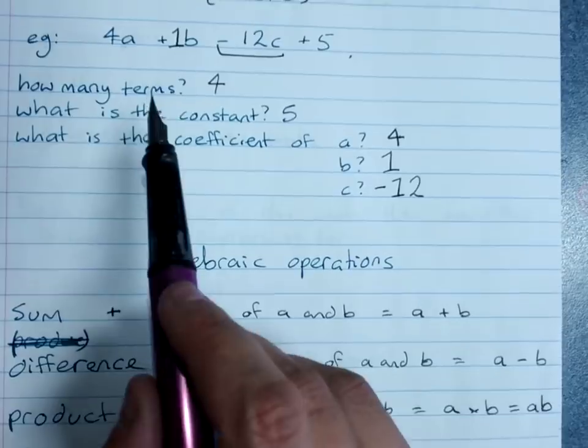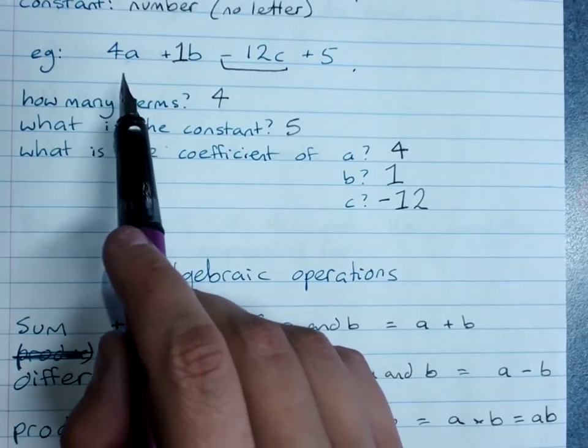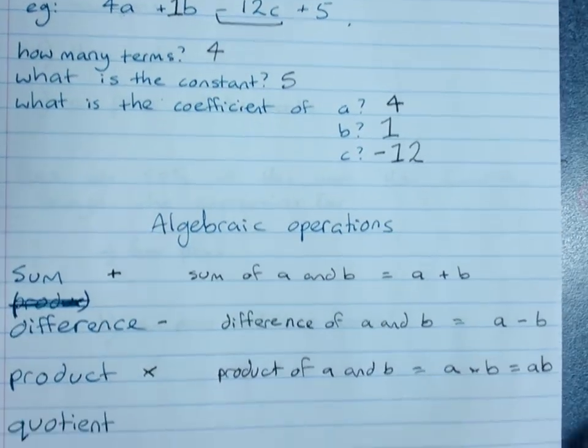And that's the same as for up here. 4a means 4 times a. It's got that invisible times sign.